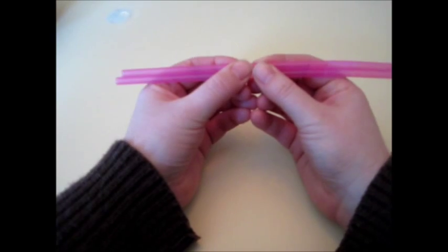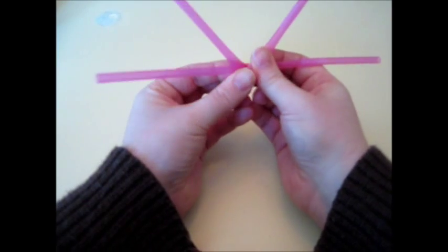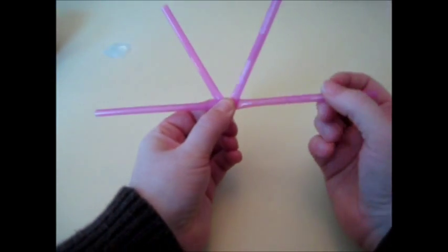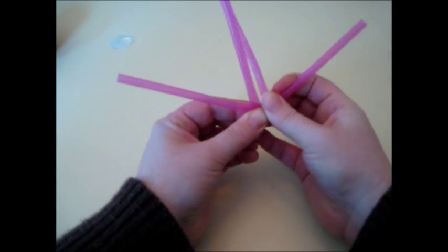To start with, you're going to need two pink straws. Take one and fold it over the other until you have this B shape. You'll always be using the straw on this side. First, go over like this.